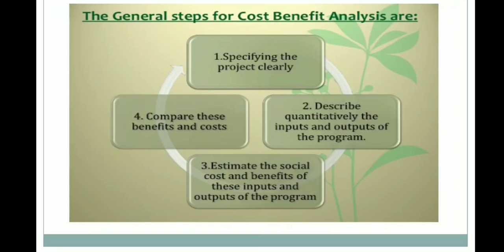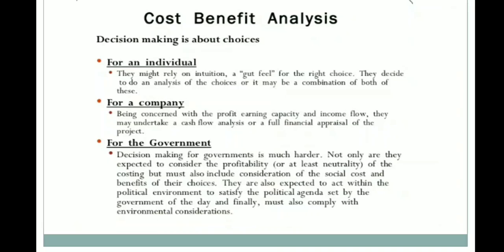The general steps for cost-benefit analysis are: first, specify the project clearly — that means the scope of the project and what accomplishment you are going to achieve. Then, describe quantitatively the inputs and outputs of the project or program. Next, estimate the social cost and benefit of these inputs and outputs. Finally, compare the benefit versus the cost to determine which project to consider.